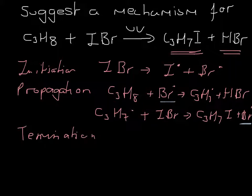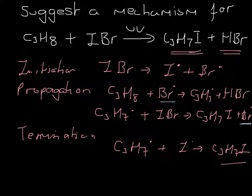Make it nice and easy for yourself. Go for the obvious one. C3H7 dot plus I dot is going to make C3H7I. There you go. Well done. So I hope you enjoyed the alkane questions. And there will be an alkene one coming up soon. So don't spend too much time on the beach. Enjoy.